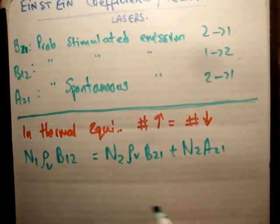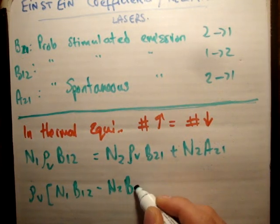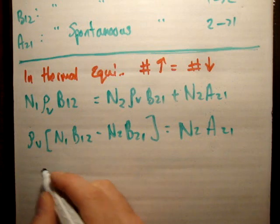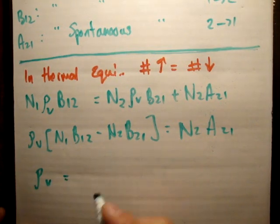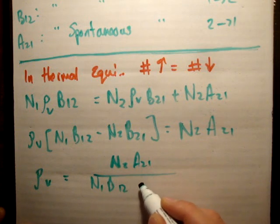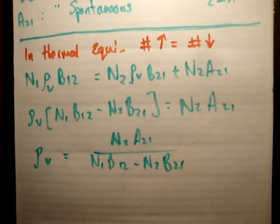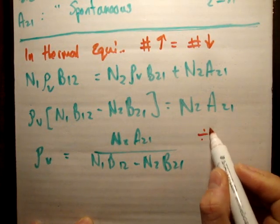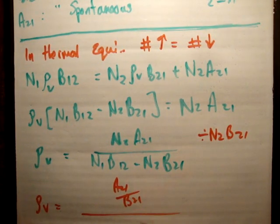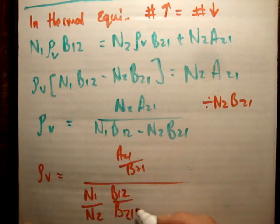If we rearrange this, we get N1·B12 minus N2·B21 equals N2·A21. Rearranging again, the energy density equals N2·A21 divided by (N1·B12 minus N2·B21). Dividing everything by N2·B21, we get A21/B21 divided by (N1/N2 · B12/B21 minus 1). If you've done a bit of quantum physics, you'll recognize this is looking similar to our blackbody radiation or the energy density in a blackbody cavity.